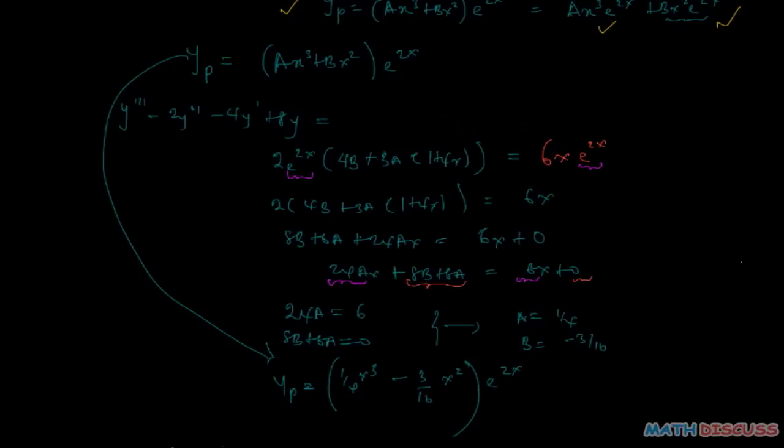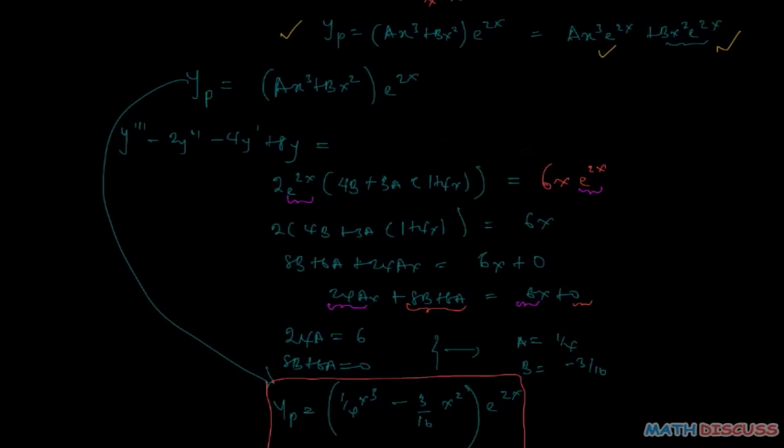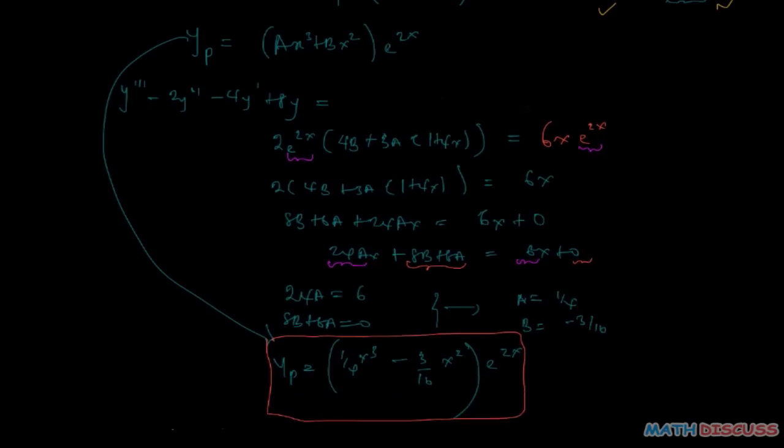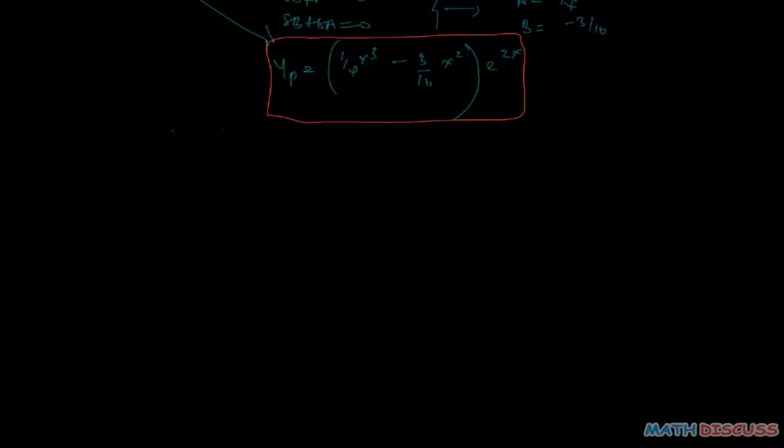And that is your yp, so therefore the general solution. So let me just circle my yp as my particular solution. And then we already have the complementary function here, so the general solution which is the sum of the complementary and the particular solution would now be...